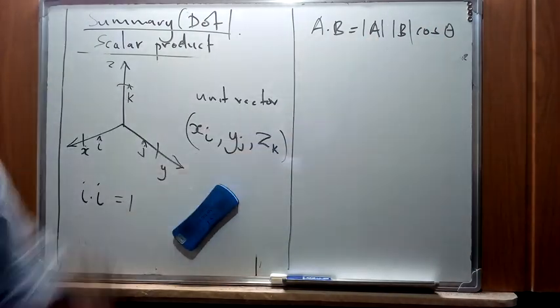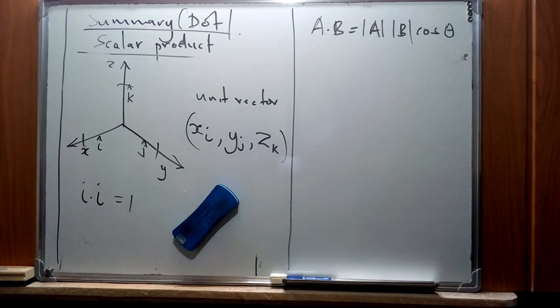...A dot B equals the modulus of A, the magnitude of A, magnitude of B, the cosine of theta. Now given that our A and B here is representing vectors that are moving in the same direction, or just a similar vector, which is i dot i...